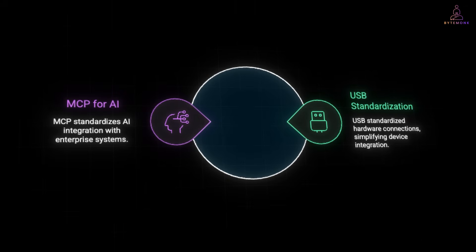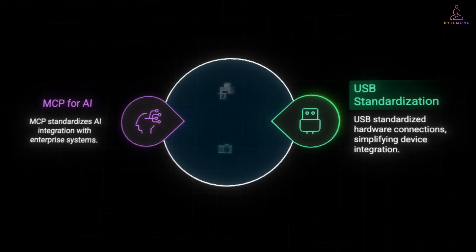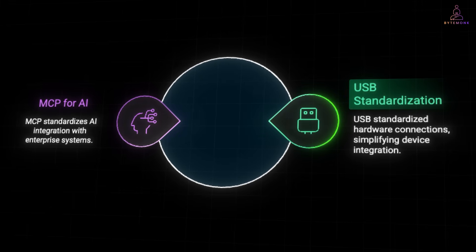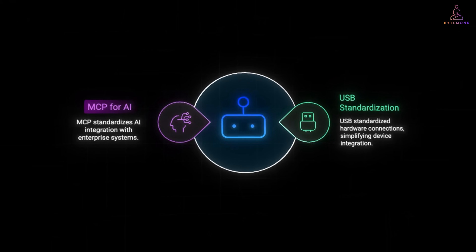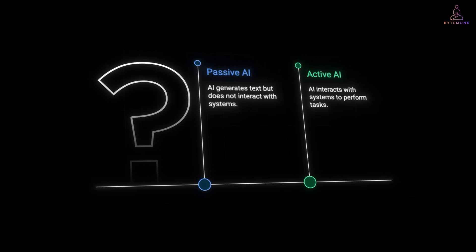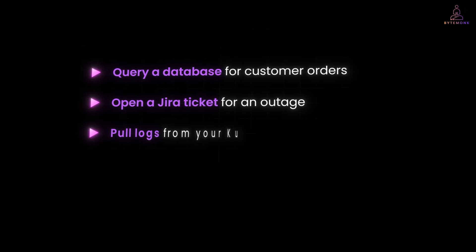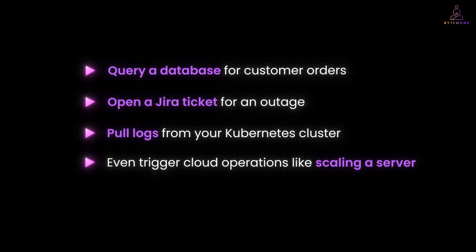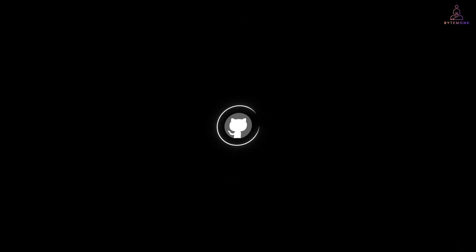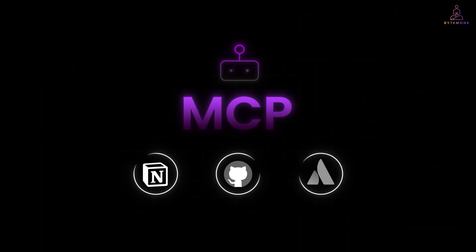Before USB became standard, connecting hardware to your computer was chaos. Every printer or camera had its own driver. USB standardized that. MCP does the same for AI, but with your enterprise systems. It turns AI from a passive tool into an active participant in your infrastructure. Instead of just generating text, an AI can query a database for customer orders, open a Jira ticket for an outage, pull logs from Kubernetes clusters and even trigger cloud operations like scaling a server. Companies like GitHub, Notion and Atlassian have rolled out MCP servers so AI agents can plug directly into their platforms.